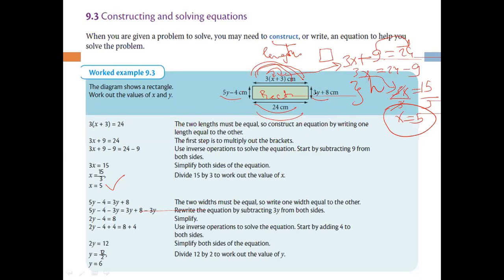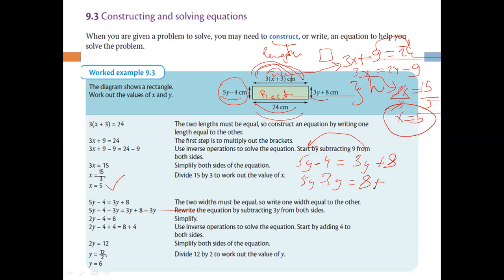Now let's find y. The two heights must be equal to each other. So 5y − 4 = 3y + 8. We have 5y and 3y — bring the 3y to the left side since it's smaller. 5y − 3y = 8, giving 2y. The minus 4 moves to the right side, changing to plus 4, so 2y = 8 + 4 = 12.